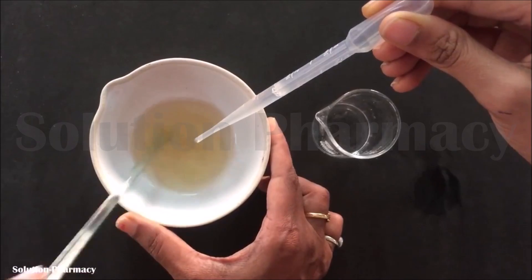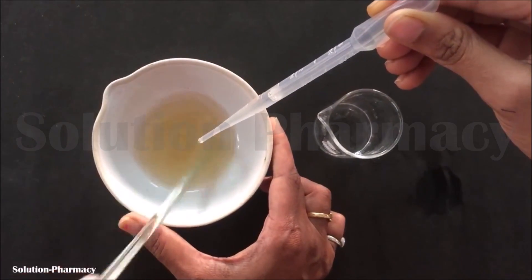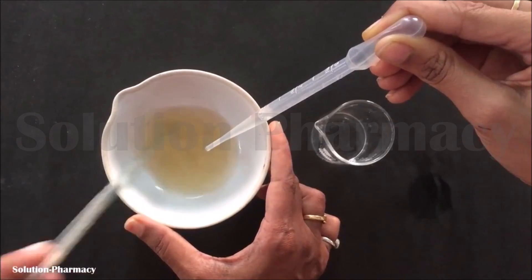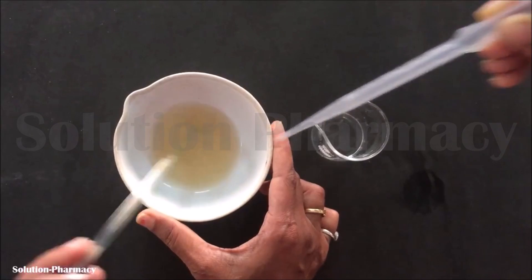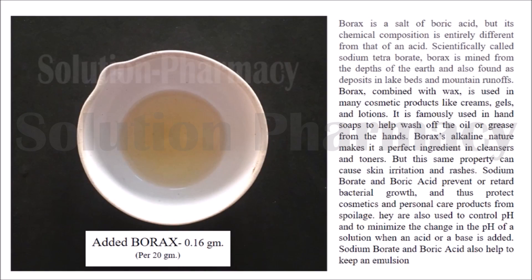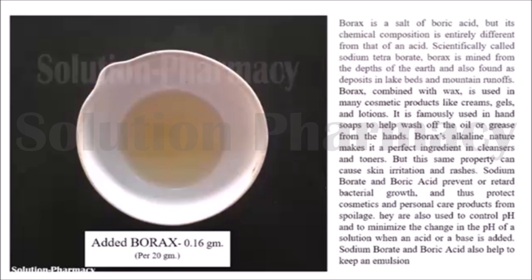Now with the help of a dropper, add the borax solution drop by drop into the china dish containing the liquid mixture of beeswax and liquid paraffin, and continuously stir the contents with a glass rod. Borax is basically the salt of boric acid. This boric acid reacts with the free acid of beeswax and acts as an emulsifying agent. Emulsifying agents are those agents which make water and oil miscible.